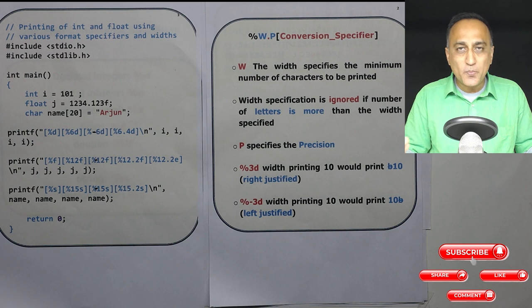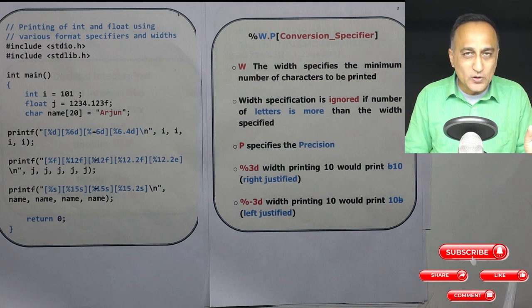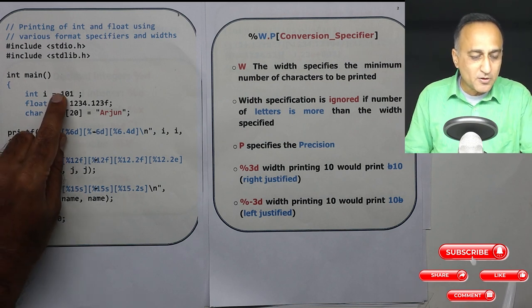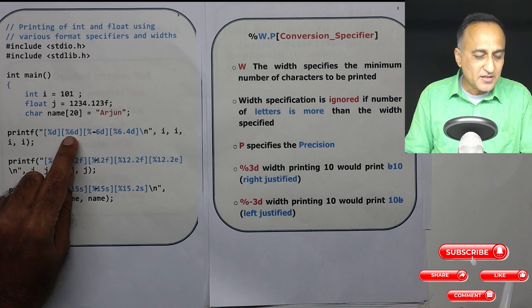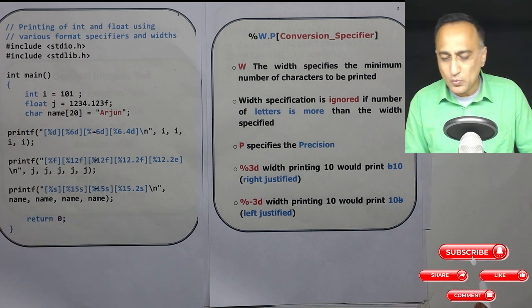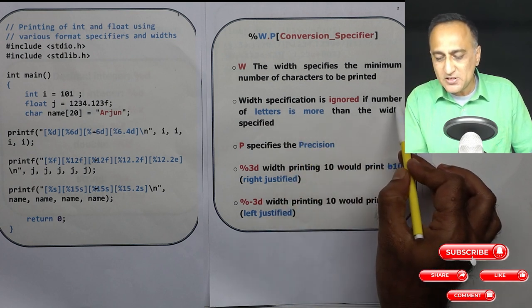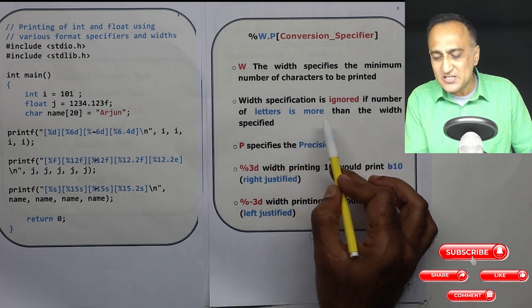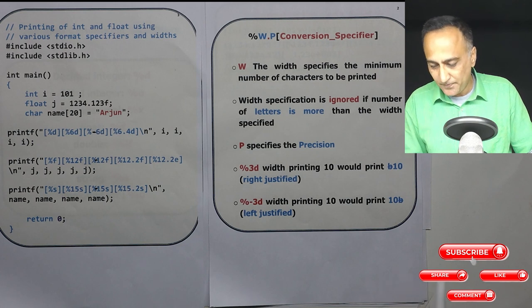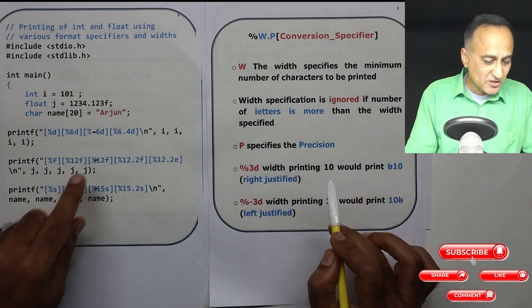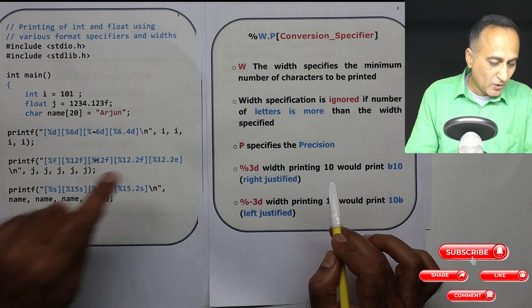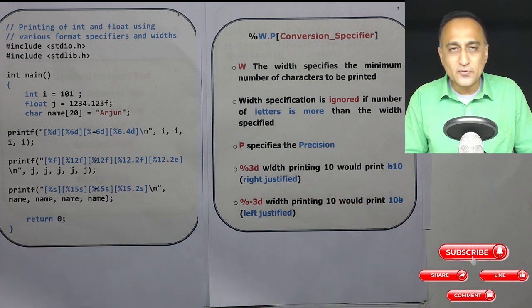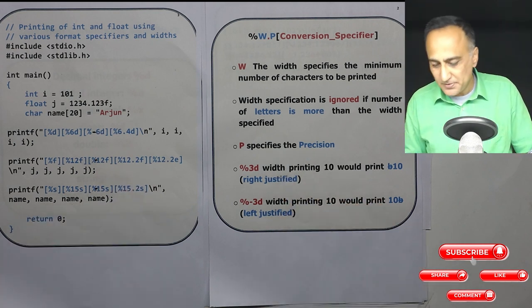So the width is obeyed only if the width is equal to or more than the number of digits present. So here %1d, %2d will have no effect, it will still print 101. So the width specification is meaningful if the width is more than, the number of letters is more than the width specified is ignored. P specifies the precision like this 12.2, 12.2e, this is useful in case of single and double precision.